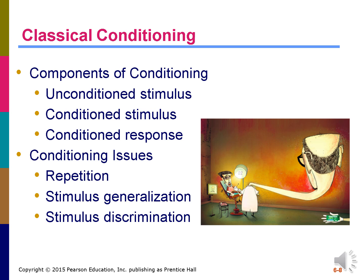Classical conditioning occurs when a stimulus that elicits a response is paired with another stimulus that initially does not elicit a response on its own. Over time, the second stimulus causes a similar response because we associate it with the first stimulus. Ivan Pavlov, a Russian physiologist who conducted research on digestion in animals, first demonstrated this phenomenon in dogs. He paired a neutral stimulus — a bell — with a stimulus known to cause a salivation response in dogs. The meat powder was an unconditioned stimulus because it was naturally capable of causing the response. Over time, the bell became a conditioned stimulus, and the dogs learned to associate the bell with the meat powder and began to salivate at the sound of the bell only.